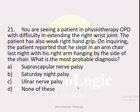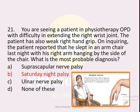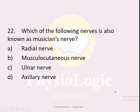MCQ number twenty-one: A patient has difficulty extending the right wrist and weak hand grip after sleeping in an armchair with his arm hanging by the side of the chair. Options: A — suprascapular nerve palsy, B — Saturday night palsy, C — ulnar nerve palsy, D — none of these. The correct option is B — Saturday night palsy. This occurs when sleeping in such a position compresses the radial nerve in the radial groove of the humerus, causing wrist drop.